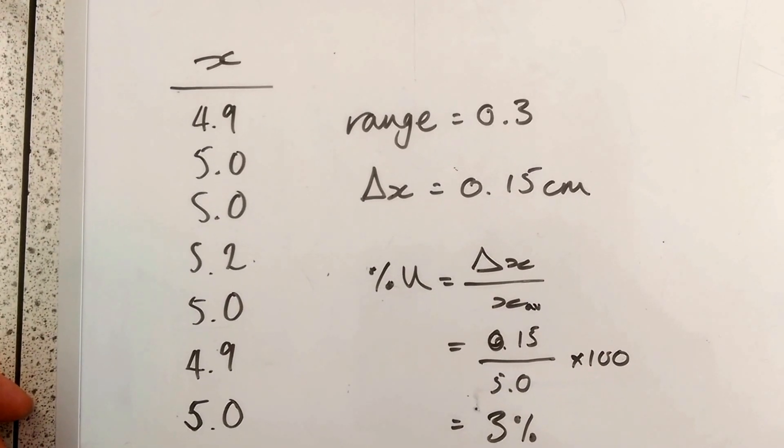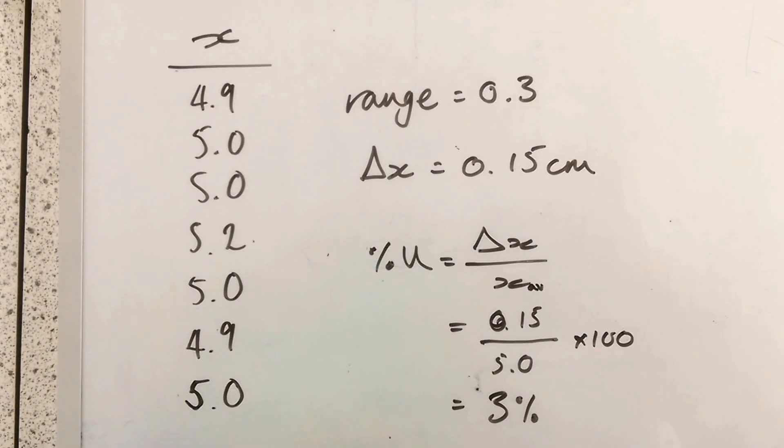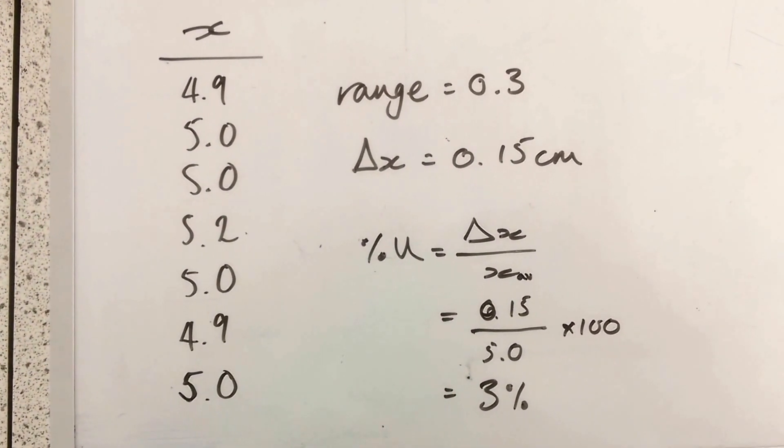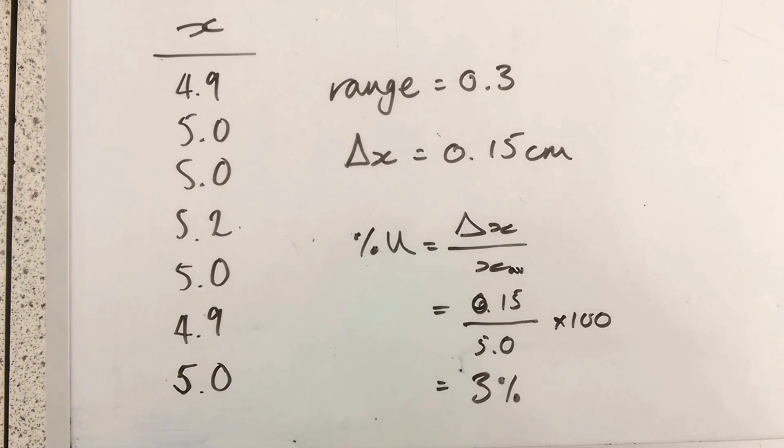So we can say my uncertainty is probably half of that range. It's 0.15 centimetres. So now when I calculate my percentage uncertainty, the change in X over the average of X,